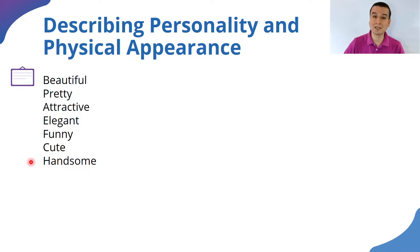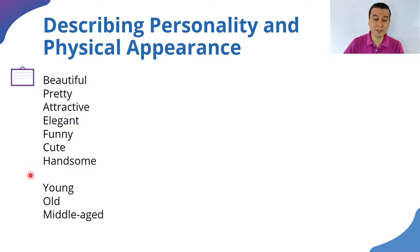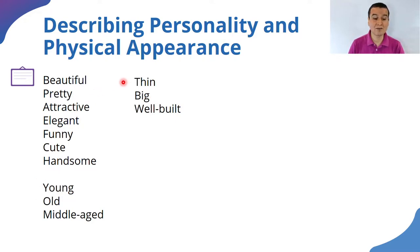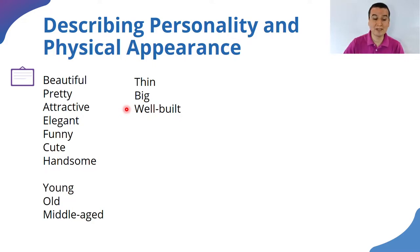We can also describe physical appearance using adjectives that refer to a person's age, for example: young, old, or middle-aged. Or we can talk about their size or build — we could say that a person is thin, big, well-built, or muscular.